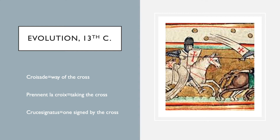Croisade, in French, meant 'way of the cross.' You also see people referencing prendre la croix — 'I took the cross' — and the Latin crusignatus means 'one signed by the cross.' Once you pledged and vowed to go on crusade, that became a very formal moment. Especially with elite members of society, it was a big public spectacle in a church: you would kneel, take your vow, and a priest or bishop would sign off on it. Once you took that vow, you were able to wear the mark of the cross, signifying outwardly that you'd become a crusader.